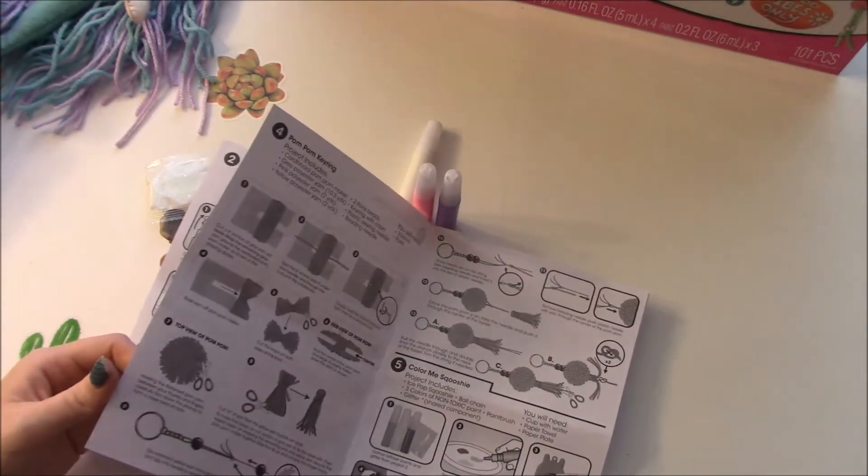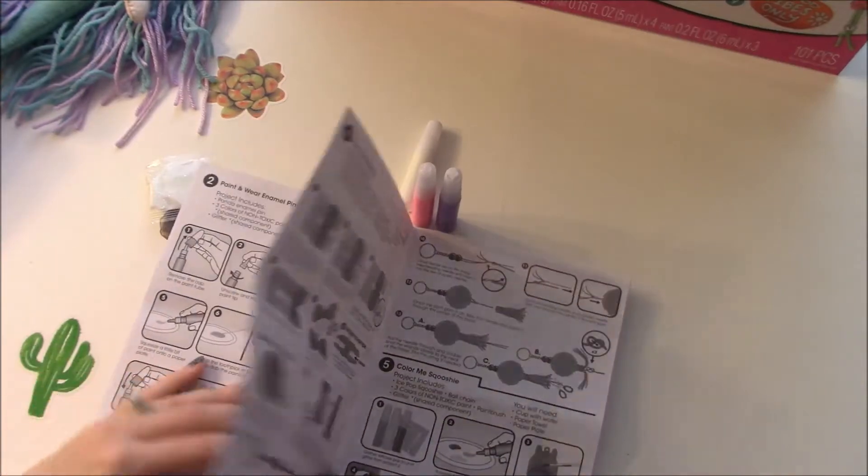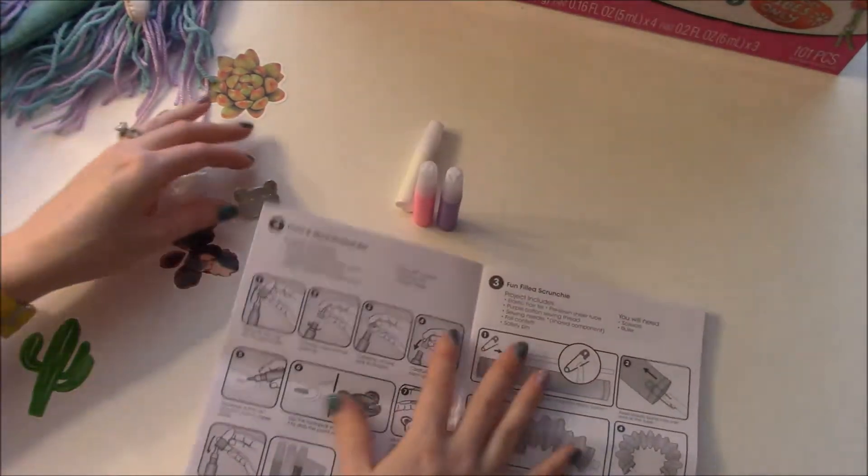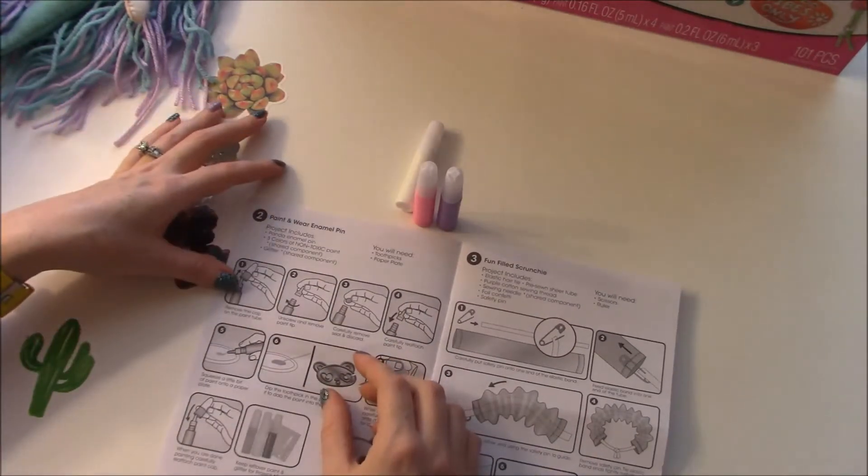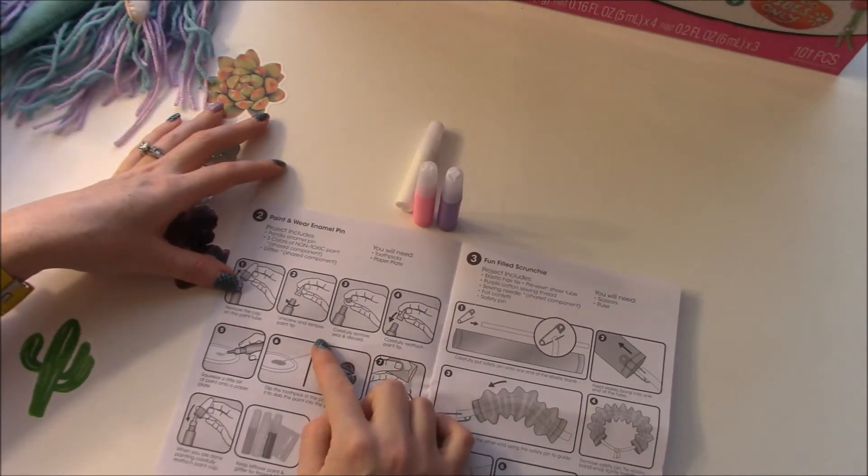Oh here it is. So yeah, the glitter and the paint are all the ones that you use for the squishy. So we want to remove the caps and unscrew.